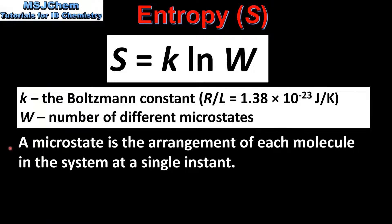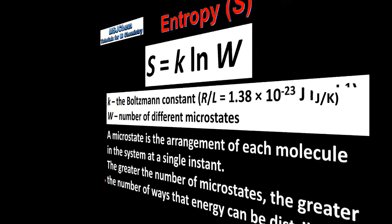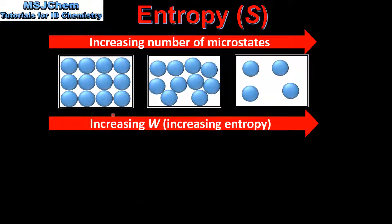A microstate is the arrangement of each molecule in the system at a single instant. The greater the number of microstates, the greater the number of ways that energy can be distributed. So as the state changes from solid to liquid to gas, we get an increasing number of microstates.